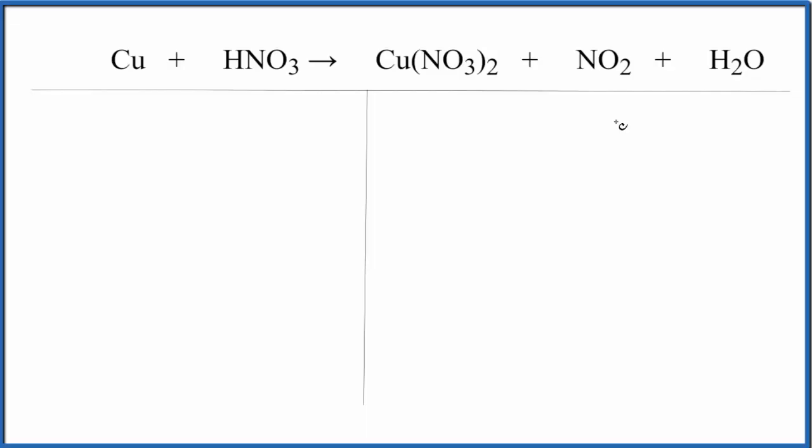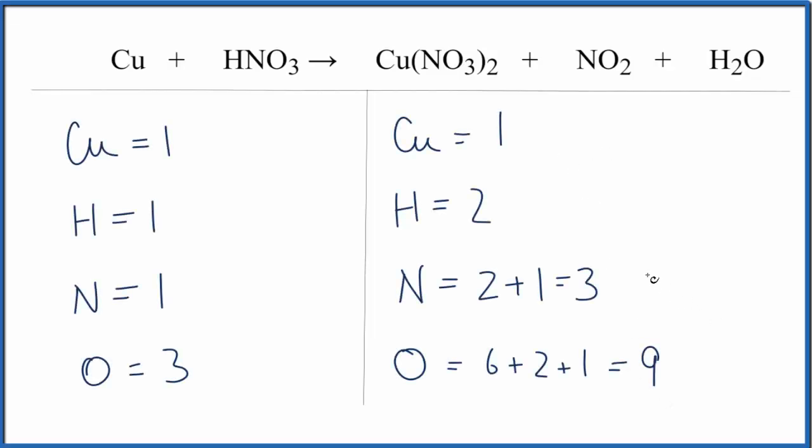This is a bit of a challenging equation to balance. It took me a few times until I figured it out, and this is the solution that I came up with. So let's count up all the coefficients here. The thing to watch out for on the product side of the equation is we have 2 times the 1, that's 2 nitrogens plus this 1 here. That gives us 3 oxygens.